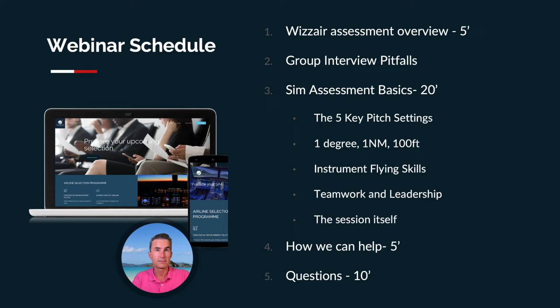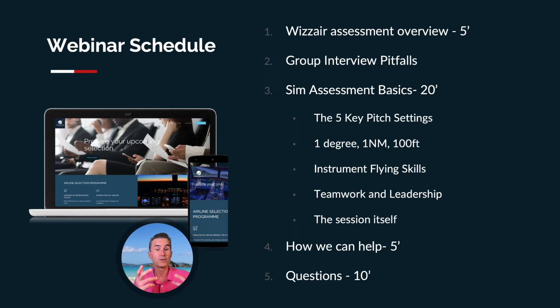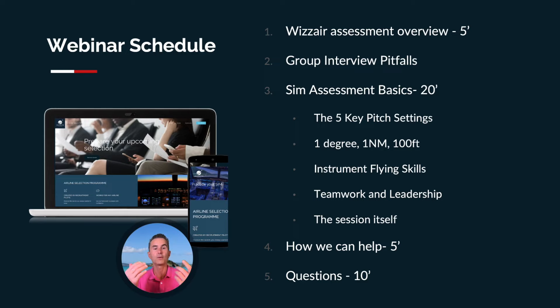So what are we going to do today? We're going to talk about the Wizz Air assessment and what it's made of. Then we're going to talk about group interview pitfalls — the group interview is the most difficult part, along with the SIM of the Wizz Air assessment, because it's an eliminatory phase. Then we're going to talk about SIM assessment basics, and we'll reveal for the very first time the five key pitch settings on the Airbus 320. We'll cover the one degree, one mile, 100 feet per minute rule, instrument flying skills, and teamwork and leadership.